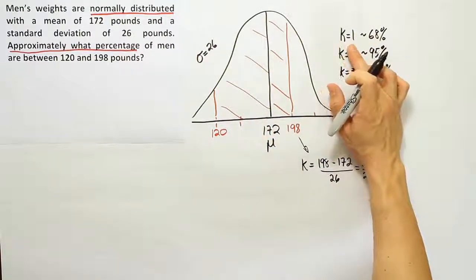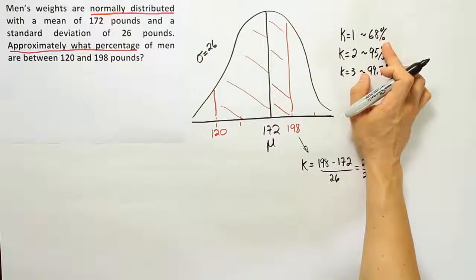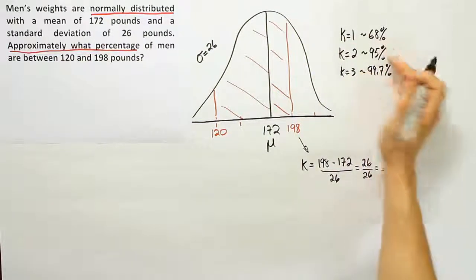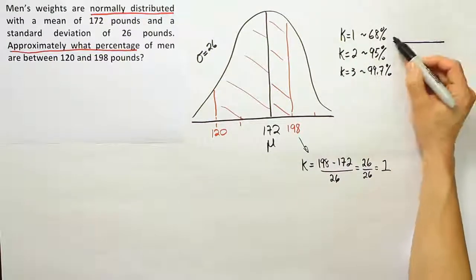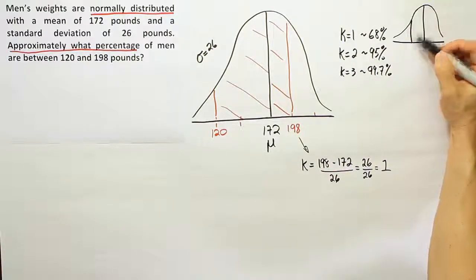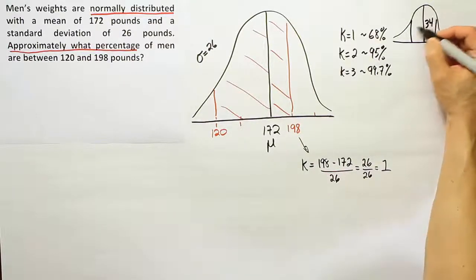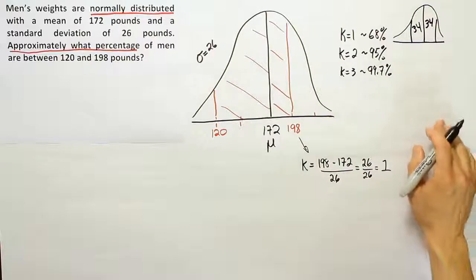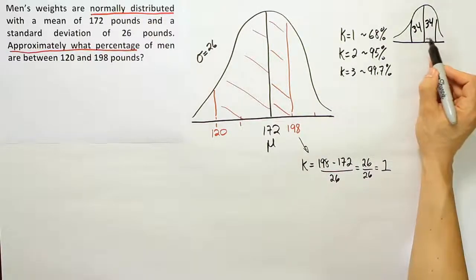When I see that k equals 1 corresponds to 68 percent of the area, I know it actually breaks down neatly into two halves. One below, one above captures 68 percent, but that'll be 34 in each piece. That means from here to here must be 34 percent.